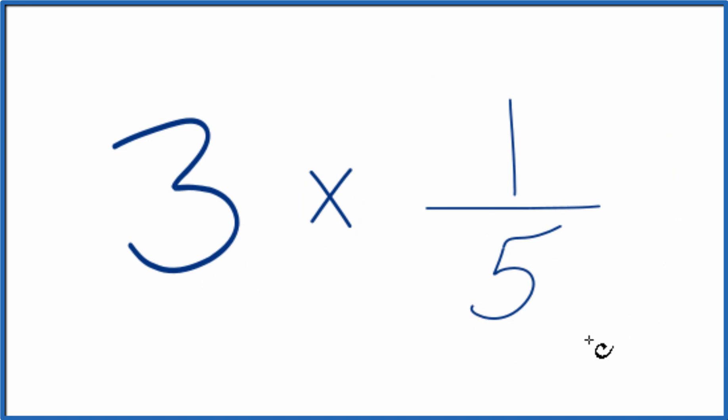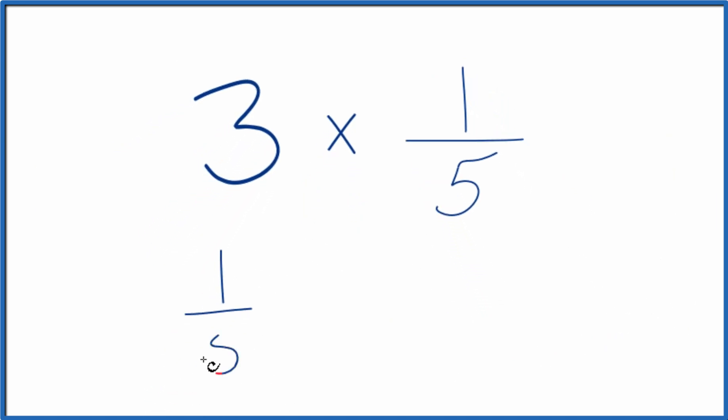So first off, you could just add one-fifth together three times, like this. One-fifth plus one-fifth plus one-fifth. So we have one, two, three times the one-fifth.